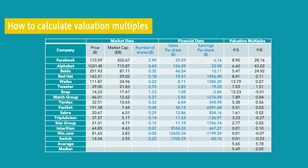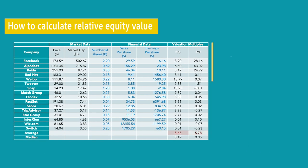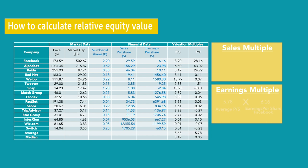How do we calculate equity value? Depending on the purpose of valuation, we usually use the peer benchmark — that is the average and median. In our case of Facebook and its peers, we use peer averages of price to sales, that is 5.6, and price to earnings, that is 5.78. The formula for equity price for a company is: for the sales multiple, average price-to-sales of 5.6 multiplied by sales per share of the company; and for the earnings multiple, average price-to-earnings of 5.78 multiplied by earnings per share of the company.